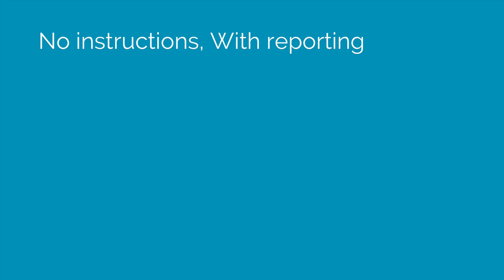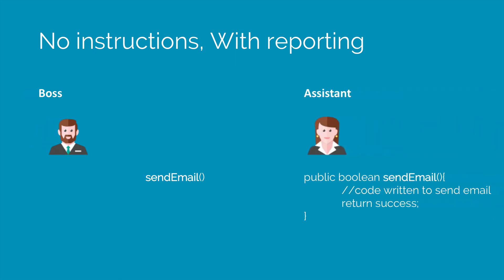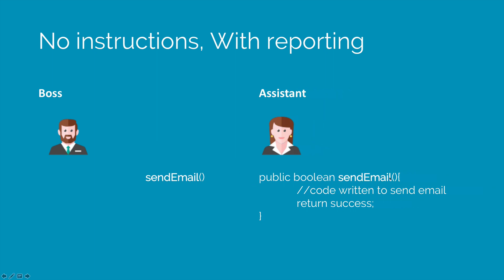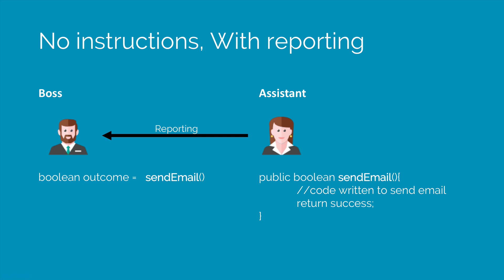Let's go one step further and take a look at the assistant that can report back to the boss. The boss says send an email. This time the assistant has the sendEmail method with all the code to send email to some person. Notice that there is a statement saying return success at the bottom. This success is a boolean variable, which is why I have public boolean sendEmail instead of public void sendEmail as in the previous slide. If the email was sent successfully then the assistant is going to report back to the boss returning true, otherwise it will return false. The boss can use this value and store it inside some variable such as outcome, to figure out how many emails were sent successfully and how many failed. But notice that the boss still doesn't say to whom the email must be sent and what it should contain.